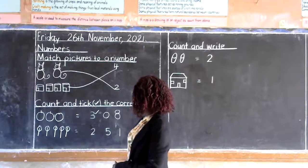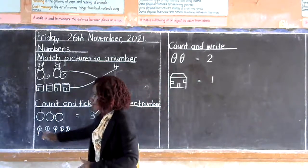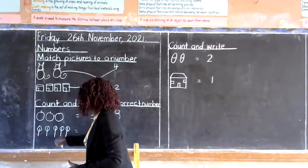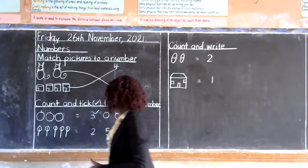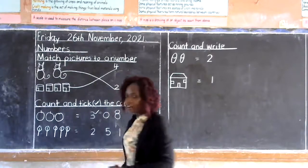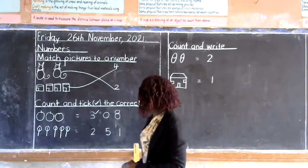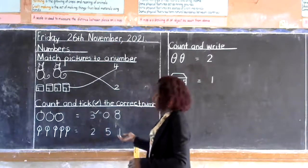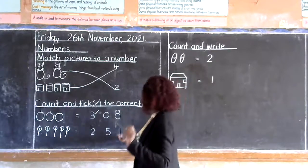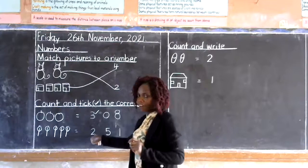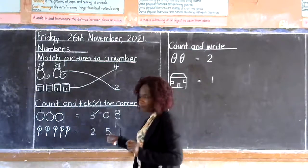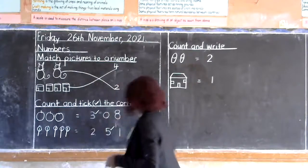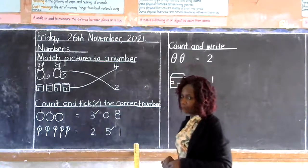Now can we count the sweets? One, two, three, four, five. Five. Now we are going to look for number five. We need to look for only number five. Is this number five friends? Yes. We tick number five. Have you got me?